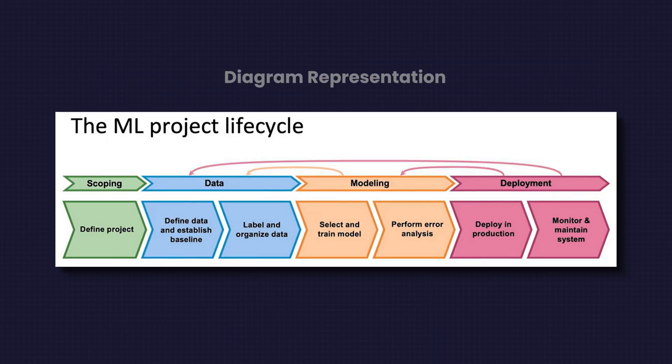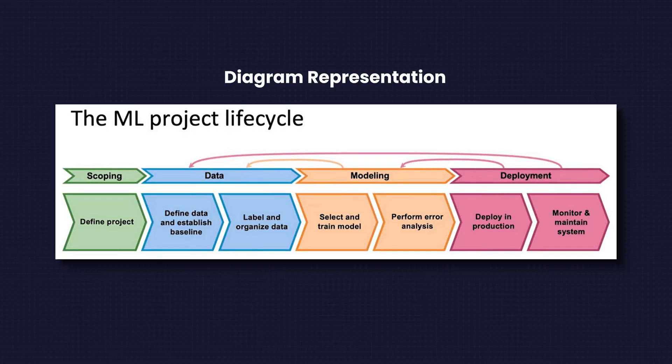MLOps makes sure that your ML model — in this example of a building — is connected with electricity, connected with a security system, and so on, also improving over time. ML is not just about building a model. It's also about making the model useful and reliable. To summarize: companies don't want standalone buildings. They want fully functional cities.